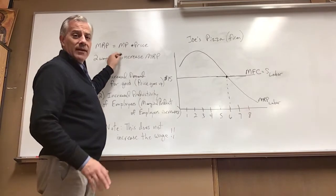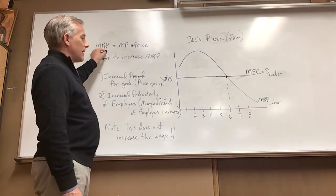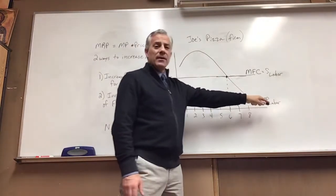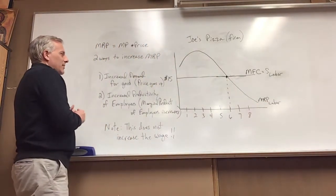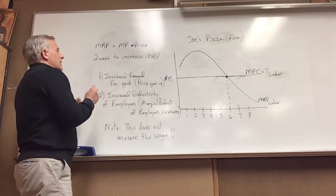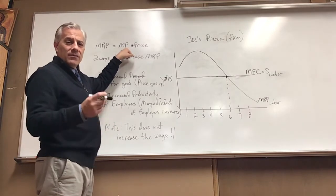So let's start with, you know, marginal revenue product is the super mega important thing on the graph which is our demand for labor for the firm and there's two ways to increase this.